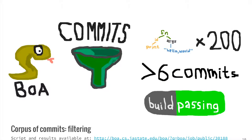To collect commits, we used BOA. Using a BOA script, we filtered projects having at least 200 AST nodes and more than 6 commits. This filters out trivial projects. Then we checked for the presence of a Travis.yaml file that indicates that a project uses TravisCI. After filtering, nearly 13,000 commits from over 2,500 projects fit the criteria described.